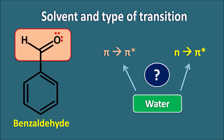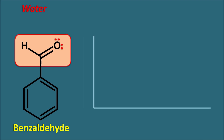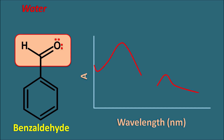Now in order to understand this, let us see the UV-visible spectra of benzaldehyde in two types of solvents — one is a polar solvent and the other one is a non-polar solvent. When we use water as the solvent, we draw a plot where the y-axis is the absorbance and x-axis is the wavelength in nanometers. Benzaldehyde shows a UV-visible spectra in water where we can observe two peaks.